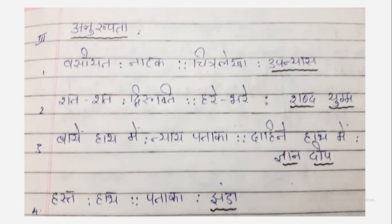We are seeing the first pair; you have to solve the second pair. Number one: Vasiyat — Natak, Chitralekha — Upanyas. Natak means drama or play, Upanyas means novel. So if Vasiyat is a drama, then Chitralekha is a novel. Second one: Shat shat — Dvirukti, Hare Bhare — Shabd Yugam. Shat shat is the same word said twice. Words like shat shat, bar bar, or koti koti come under Dvirukti Shabd Yugam — combination words used to enhance a poem or sentence.